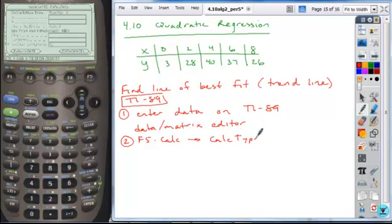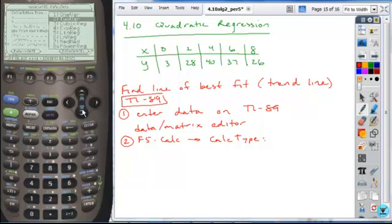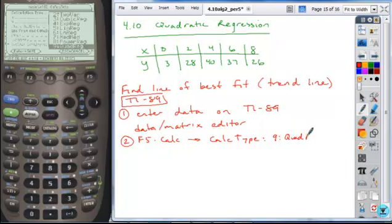So the calculation type, if you scroll through and look, 5 was the linear regression that we've already done. But this isn't a linear model because it goes up and then back down. So it's a quadratic model. So we go down to number 9. So the calculation type is number 9, quadratic regression.